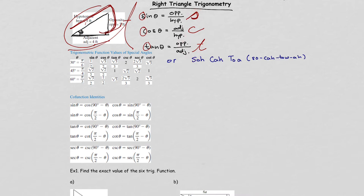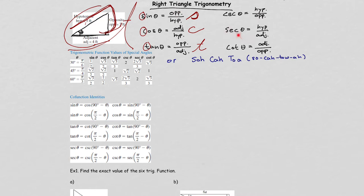Once you have sine, cosine, and tangent, and if you want to find the rest of the three trig functions, you just flip them. Cosecant is going to be hypotenuse over opposite. Secant is going to be hypotenuse over adjacent. Cotangent is adjacent over opposite.